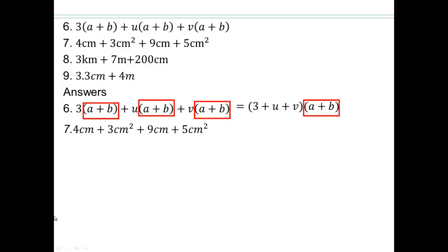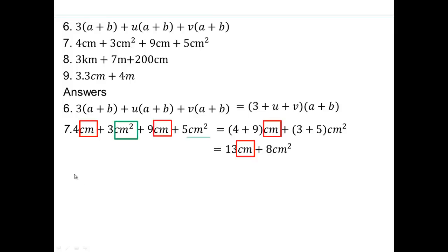Go ahead and do that. So we have 3 quantities added together, but they're all like units of a plus b, so there's this many of a plus b's. Try that. So underline, use colored pencils, underline like units, and then add them. Did you get that? Now what? All three are different units.